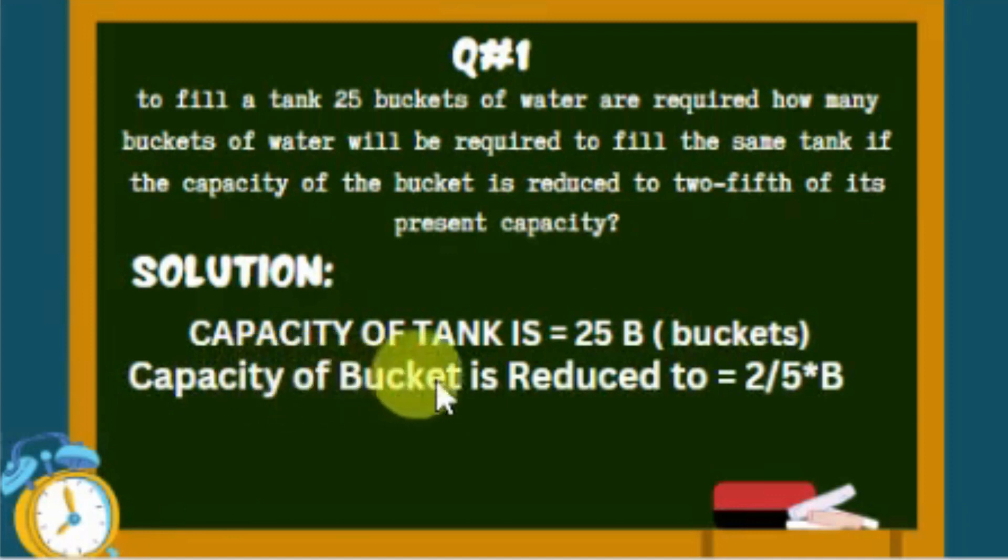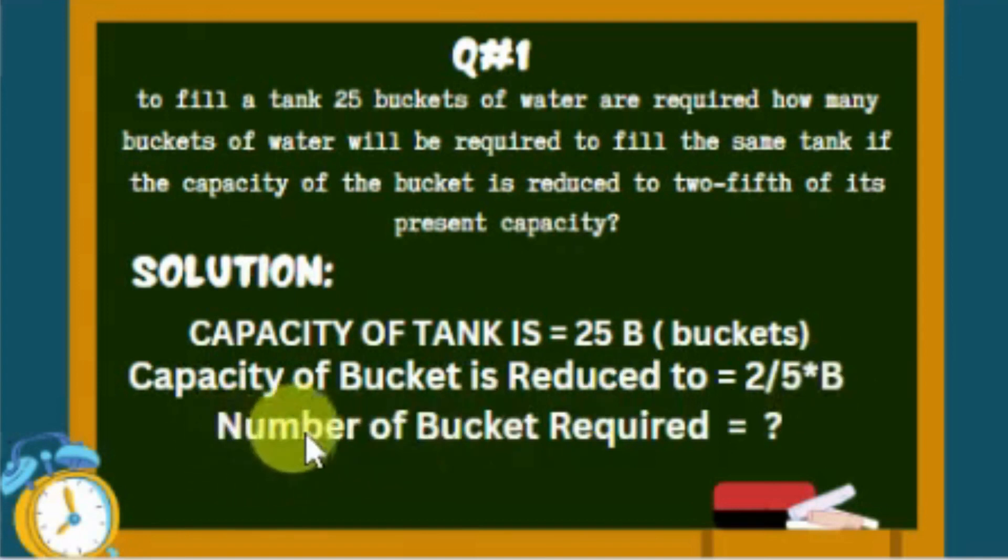Capacity of bucket is reduced to two-fifths of the given bucket B. And number three: New number of buckets required.